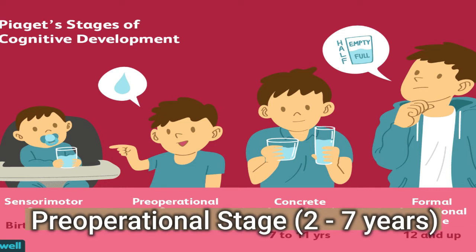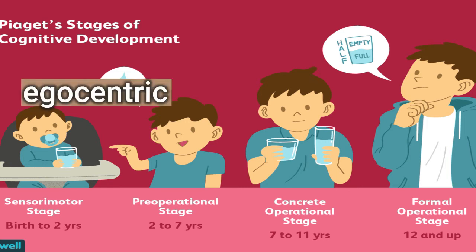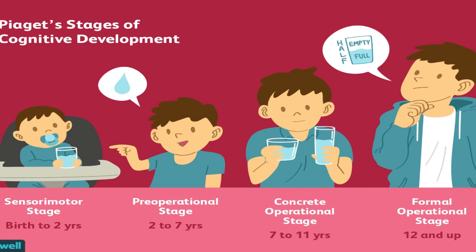Pre-operational Stage (Two to Seven Years): During this stage, young children can think about things symbolically. This is the ability to make one thing — a word or an object — stand for something other than itself. Thinking is still egocentric, and the infant has difficulty taking the viewpoint of others.